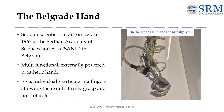Now we look at the Belgrade hand. In 1963, a Serbian scientist named Rajko Tomovic of the Serbian Academy of Sciences and Arts in Belgrade created a special prosthetic hand. This hand is unique because it's not just for looks — it's powered by an external source and can do many things. It has five separate fingers that can move independently, allowing someone to hold and grip objects firmly.